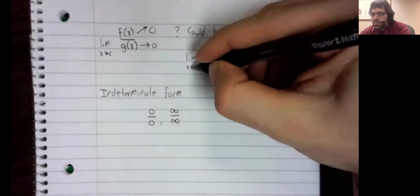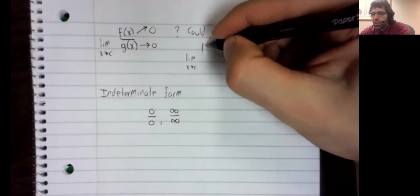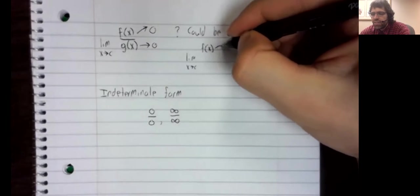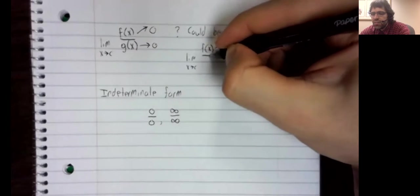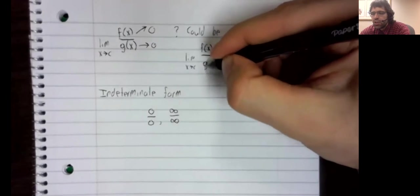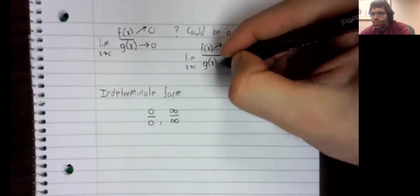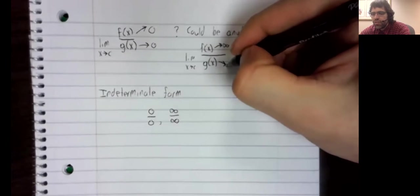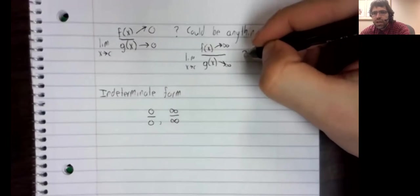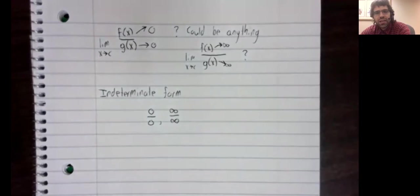Likewise, if the numerator is going to infinity and the denominator is going to infinity, that is indeterminate.